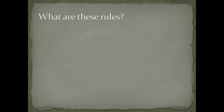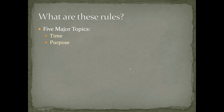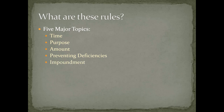The rules fall into five areas: time — how long does the executive branch have to spend money; purpose — for what reasons may the executive branch spend money; amount — how much does the executive branch get and how much flexibility do they have; preventing deficiencies; and impoundment. Let's start with time.